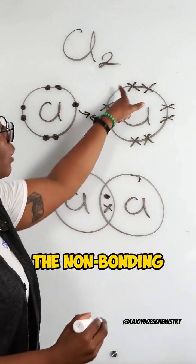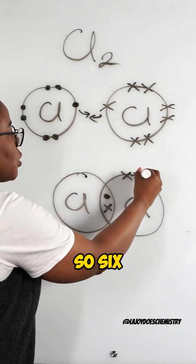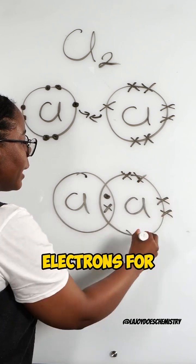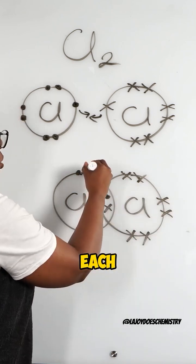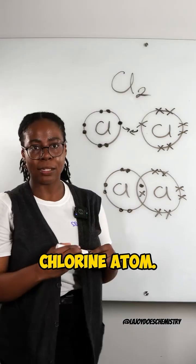Obviously not forgetting the non-bonding electrons, so six non-bonding electrons for each chlorine atom.